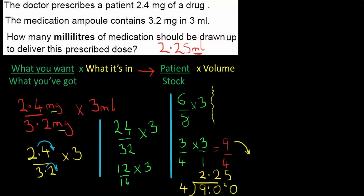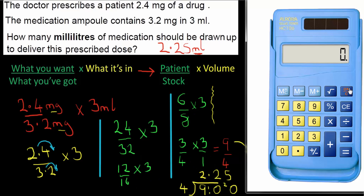Let's check with the calculator. Since the units in the fraction were the same, I can directly enter 2.4 divided by 3.2 times 3, which comes out to 2.25 — confirming our hand working.